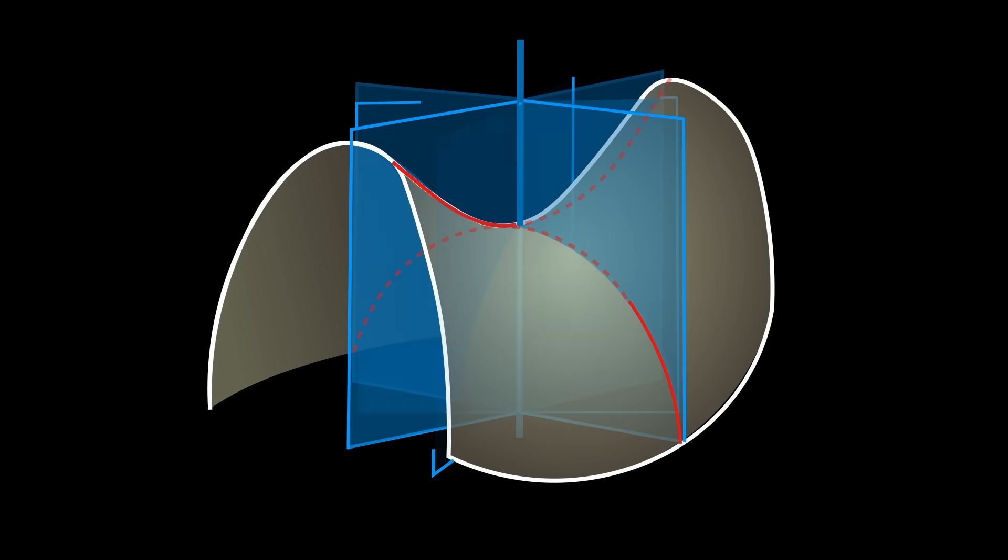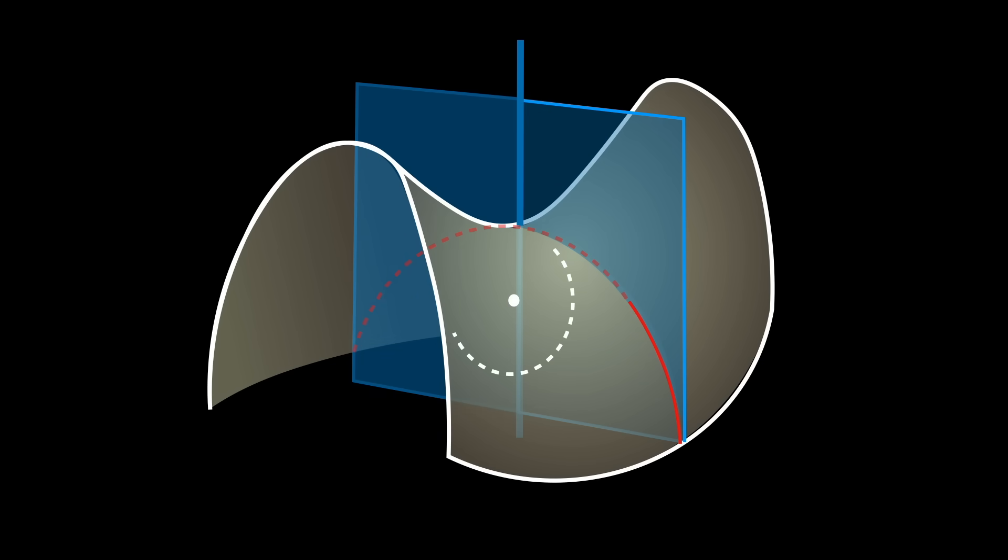Out of all possible normal slices, there are two that are very special. The first is the one that produces the normal curve that bends the most, which gives maximum curvature, and is called the principal curvature kappa 1.